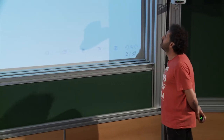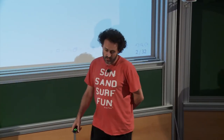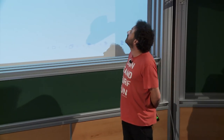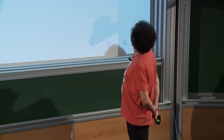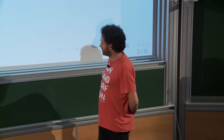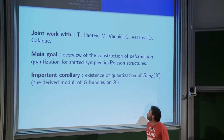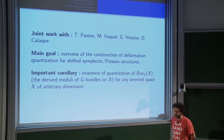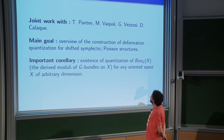The main goal of this talk is to give an overview of the construction of deformation quantization for what we call shifted symplectic or Poisson structures. An important corollary is the existence of a quantization of Bun_G(X), a certain moduli space of G-bundles on X considered as a derived moduli space. The space X is going to be of arbitrary dimension — that's the purpose of introducing this shift.